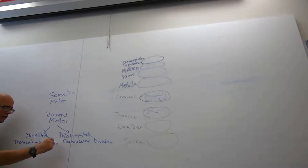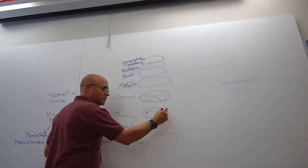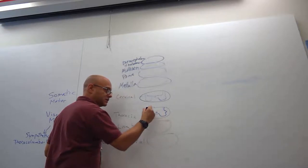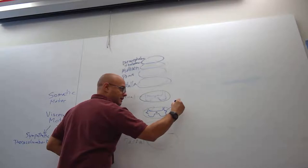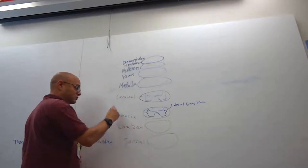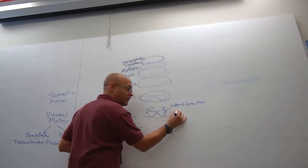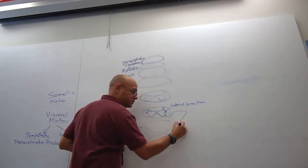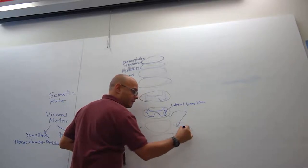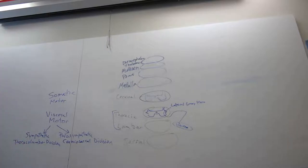That structure is referred to as the lateral gray horn. You find that lateral gray horn in thoracic, lumbar, and sacral. But in thoracic and lumbar, the neurons there — their cell bodies will exit, piggyback on spinal nerves, and exit to go to viscera: heart, lung, GI, kidney, liver. That's why they call the sympathetic nervous system the thoracolumbar — because the motor neurons from the spinal cord will extend out to cardiac and smooth muscle.